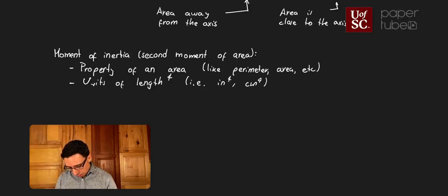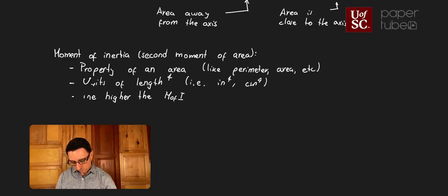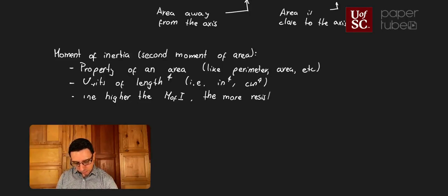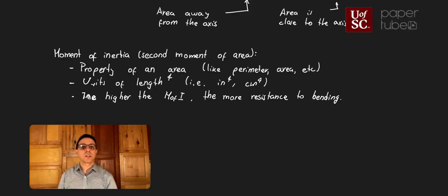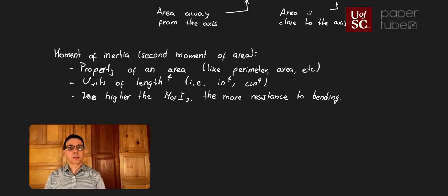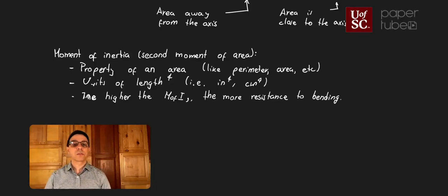The higher the moment of inertia, the more resistance to bending — that's the key thing to remember. So what is moment of inertia? It's just a property of an area, just like we learned about perimeters or areas in the past; this is just another property. Now, how do we calculate it?